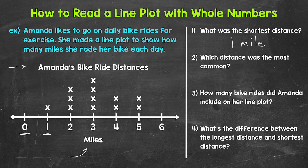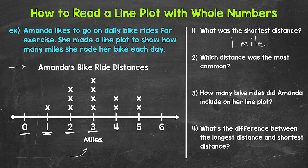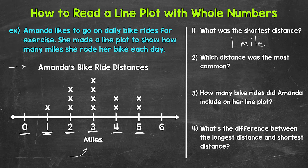Question two: which distance was the most common — which distance occurred the most number of times? One mile occurred once, two miles occurred three times, three miles occurred four times, four miles occurred two times, and five miles occurred two times. Zero and six don't have any X's, so they are gaps on each end of the number line. The most common distance was three miles — Amanda had four bike rides that were three miles.